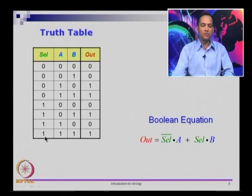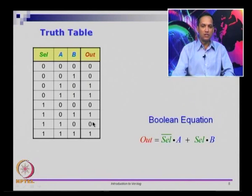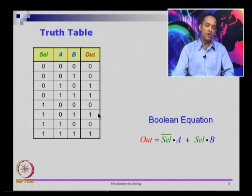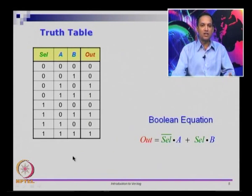Similarly, if select is 1, we want a copy of b in the output. You can notice that in the lower half of the truth table, select is 1 and this part of the column is copied on to the output. We have 2 parts: the upper part is for select equals 0 and the lower part is for select equals 1. This is the truth table way of describing this. You can write it as a symbol, you can write it in English, or even write the truth table — they are all the same.